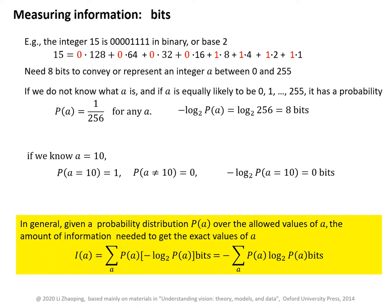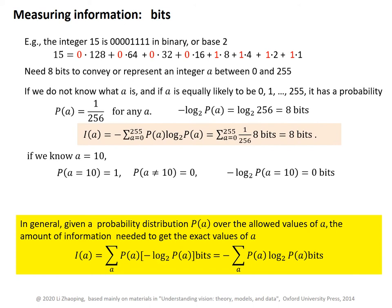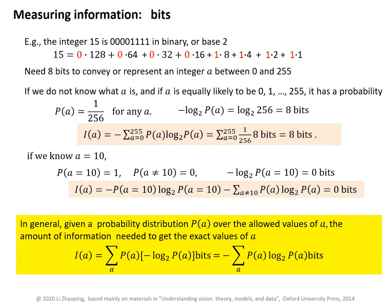In general, given a probability distribution P(A) over the allowed values of A, the amount of information needed to get the exact value of A follows this formula. It is a weighted sum of the negative log base 2 of the probabilities. So, in the example when A can be any of the 256 integers equally likely, we get this information amount as this summation — we get 8 bits. In the next example, we get 0 bits as the result.